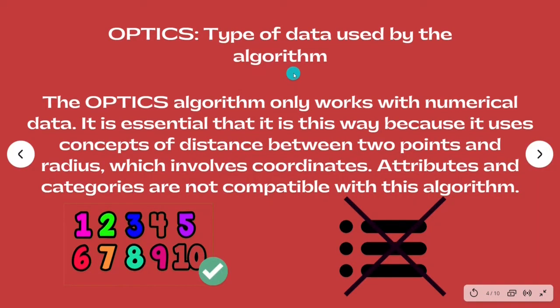Now about the type of data the algorithm supports, OPTICS only works with numerical data given the need for Euclidean distance calculation. Categories are out of the equation.